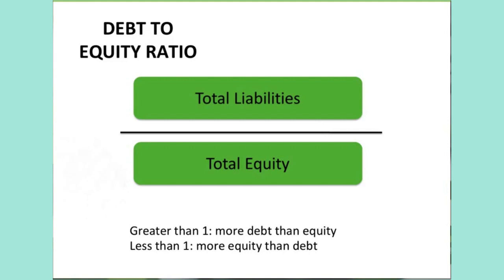When this ratio is greater than 1, it means that the assets are financed more with debt. When this ratio is less than 1, it means the assets are financed more with equity.